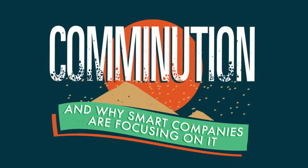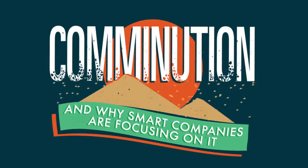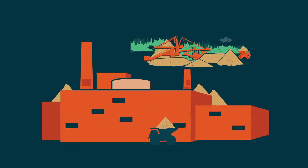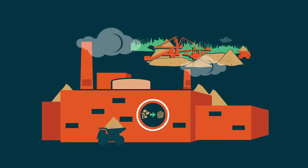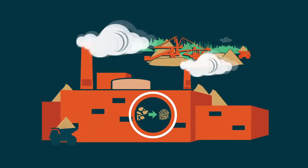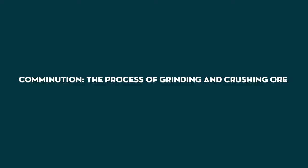Comminution. Why smart companies are focusing on it. Once mined, ores typically must be crushed to a smaller size before the desired mineral can be extracted for use in the modern world. Comminution is the process of grinding and crushing ore to extract the desired mineral.